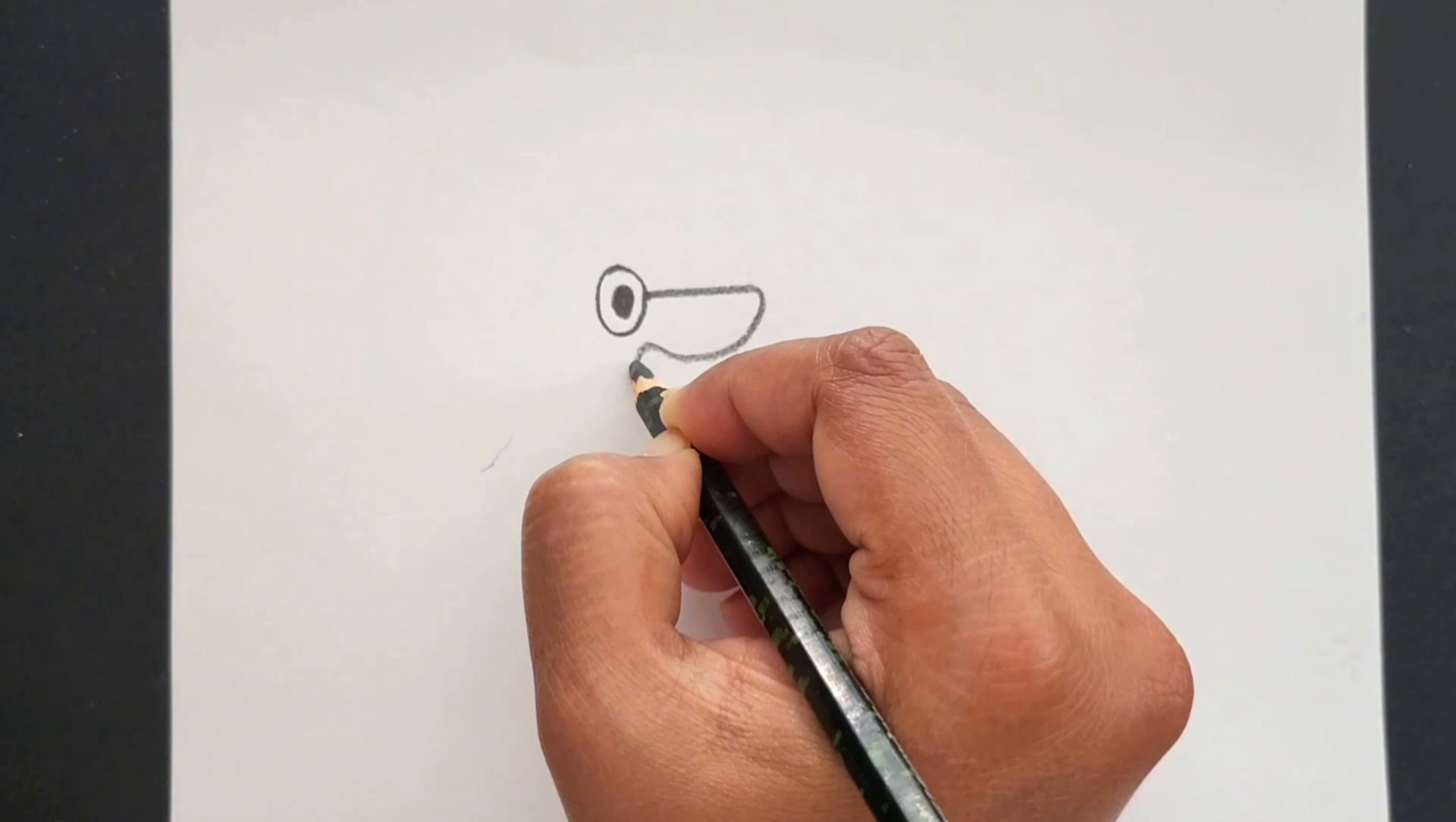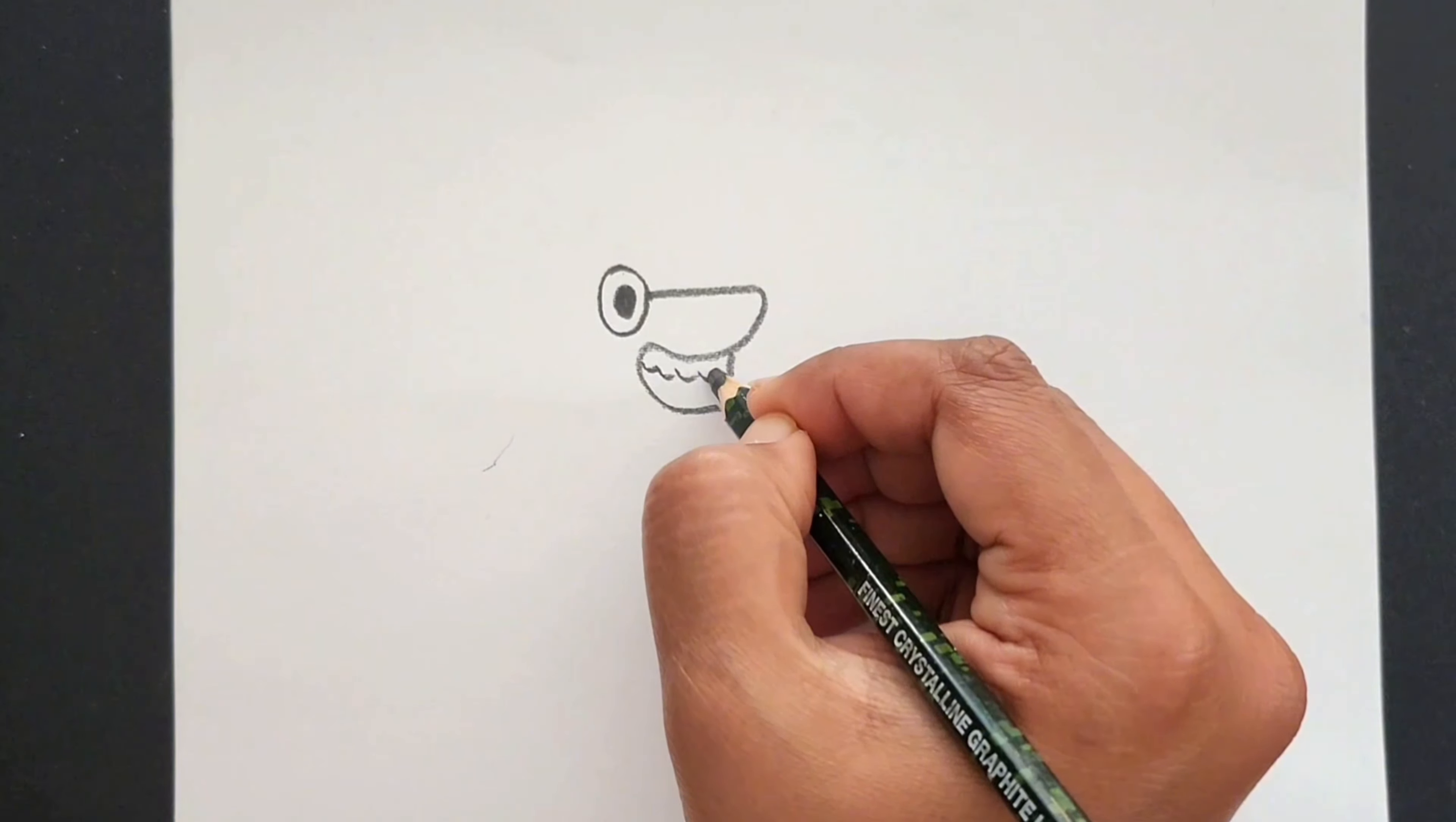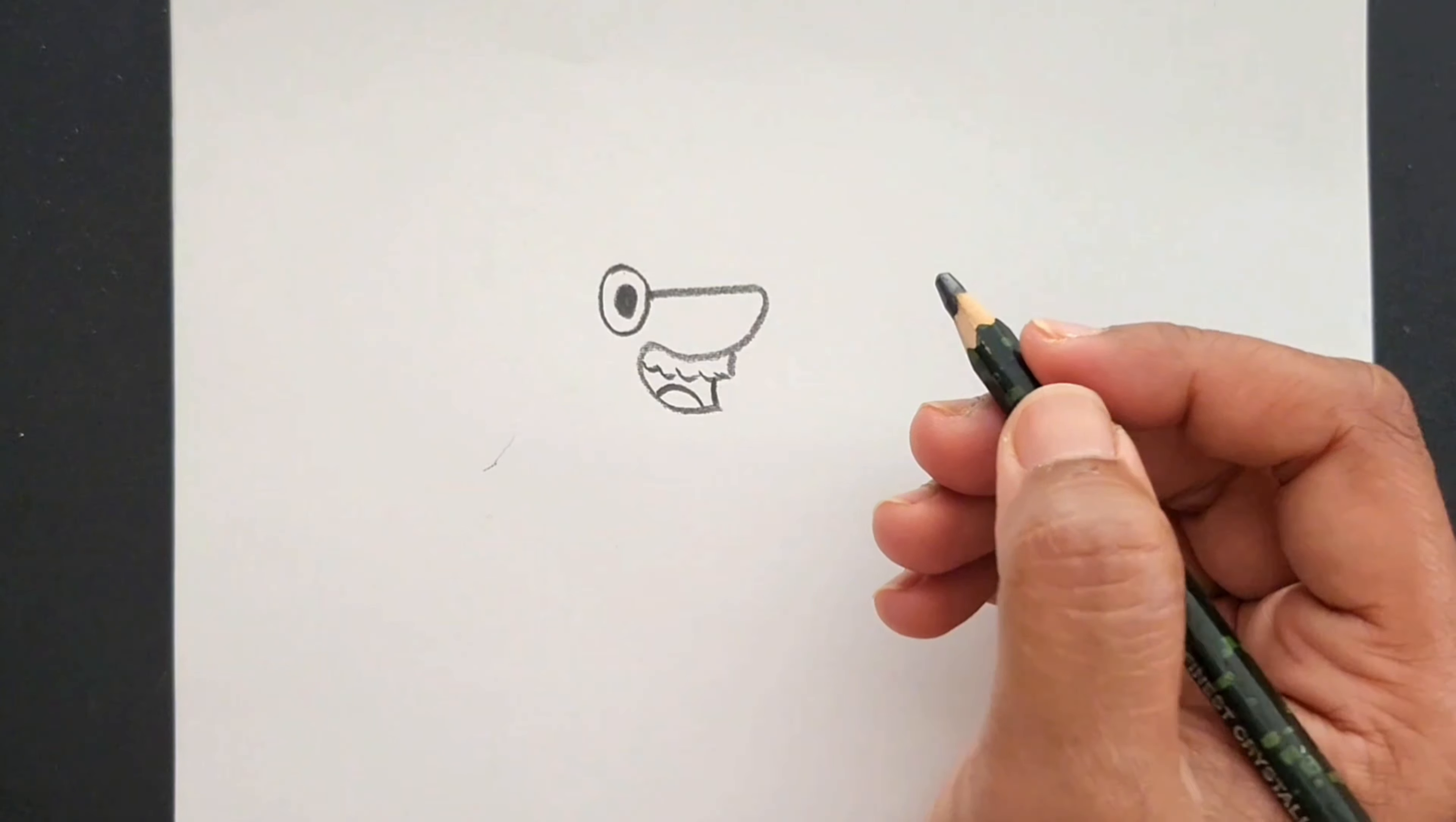Now curve in and curve back around. Now draw a line and draw a bumpy line for teeth. Now draw a line here and make a curve for tongue.